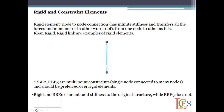Before going to see what is RB2 and RB3, we need to understand what is a rigid body element. What are rigid elements? Suppose you have two nodes — node 1 and node 2 — and you are connecting them with rigid elements. Rigid elements have infinite stiffness, and they transfer all the forces and the movements directly from one node to another node.